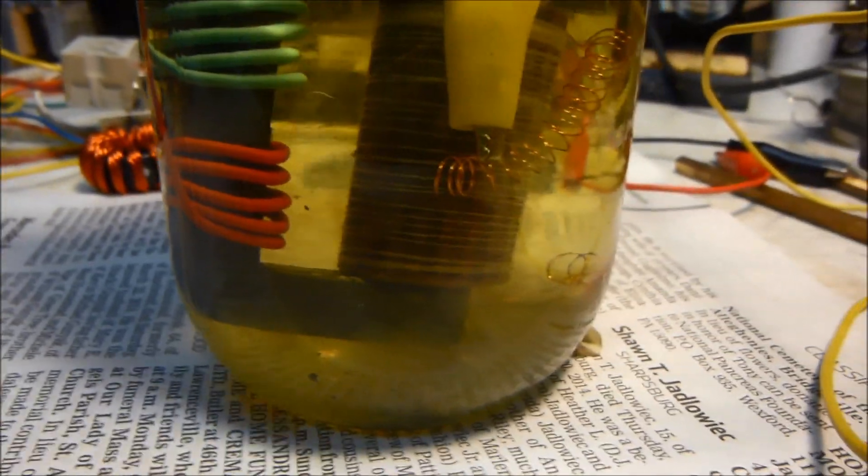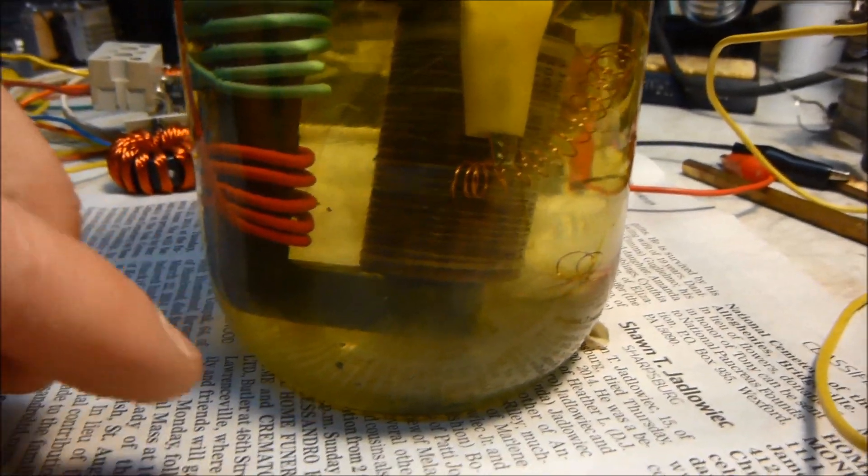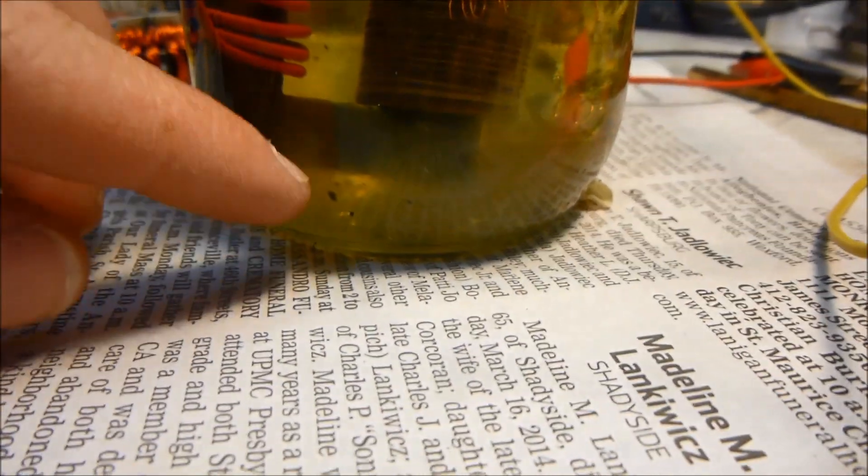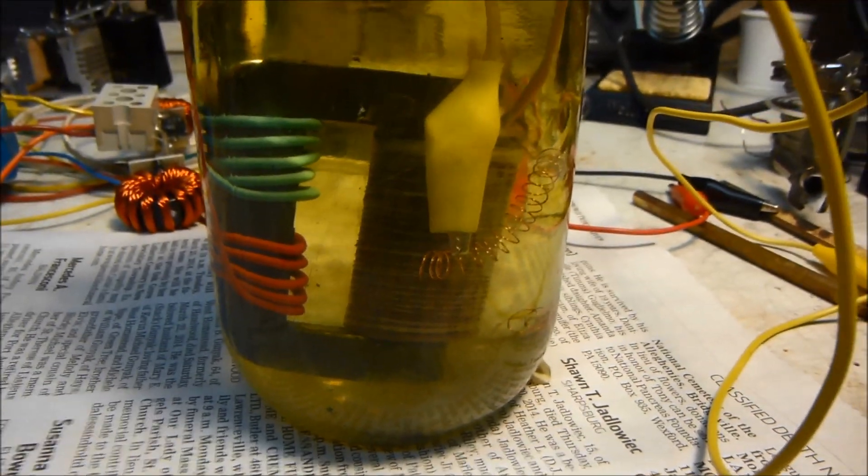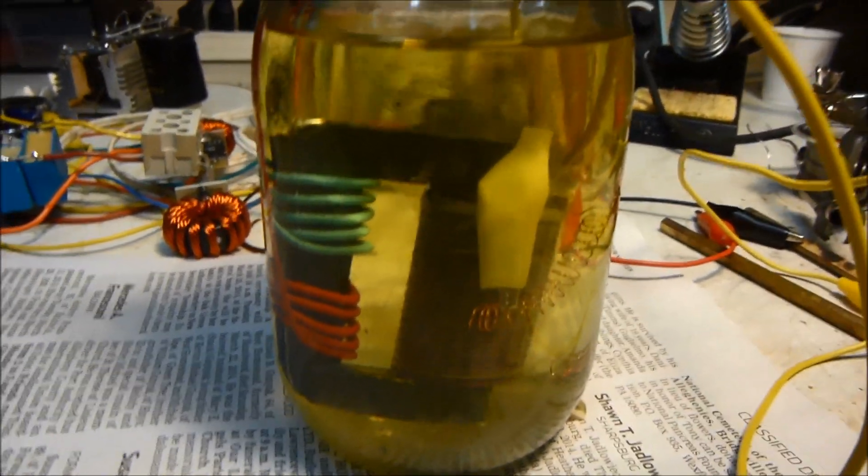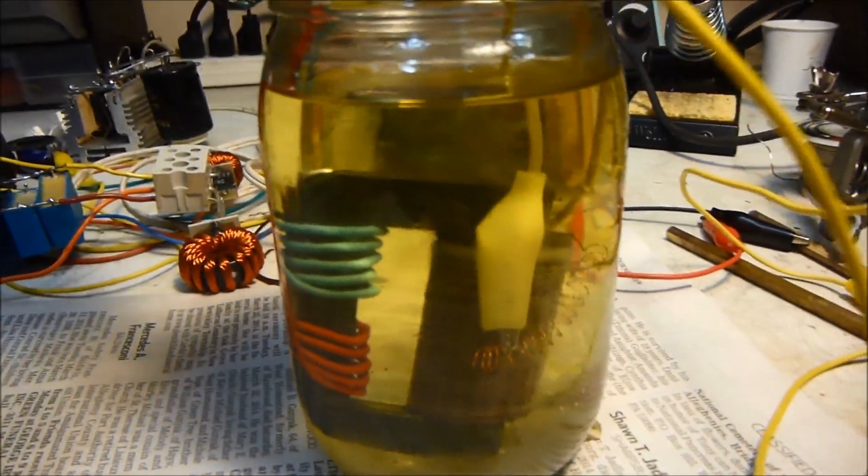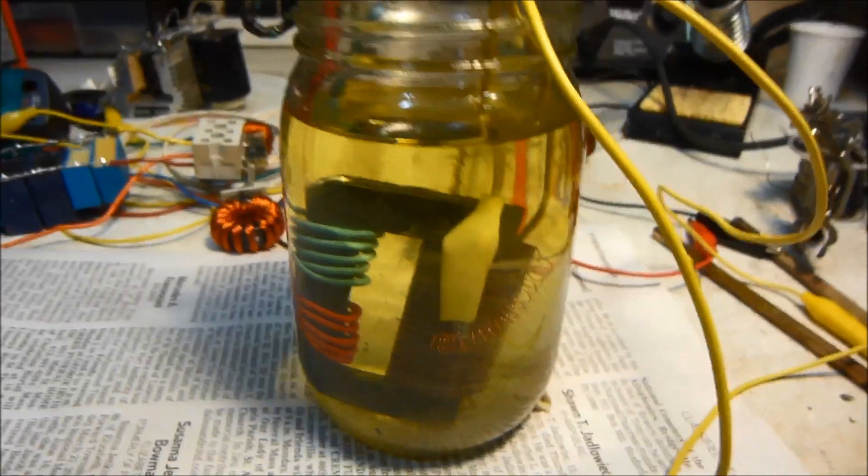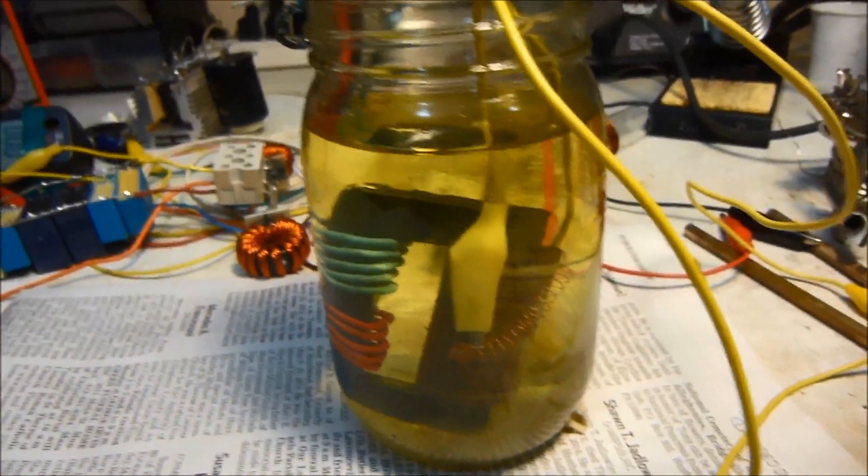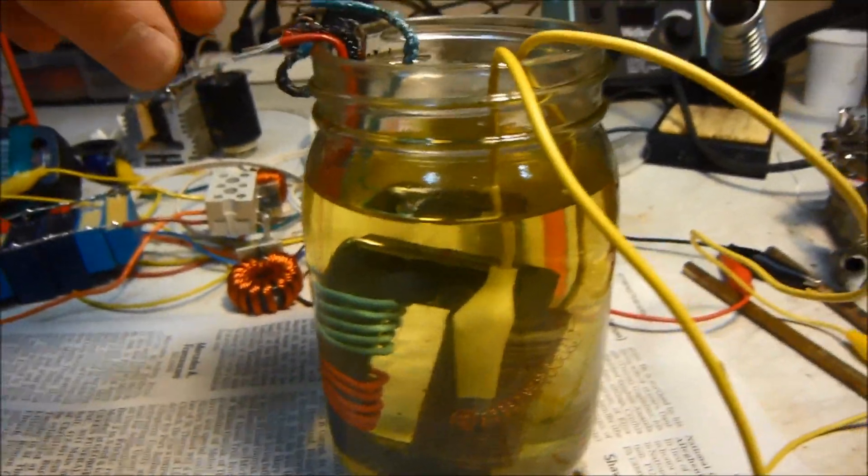...is because the vegetable oil I used has kind of gone bad in the bottom here and it's got a haziness to it, so it might not be as good of an insulator anymore. I want to make a new one and use mineral oil so it shouldn't go bad like the vegetable oil does. That's the problem with vegetable oil, it goes bad after a while.